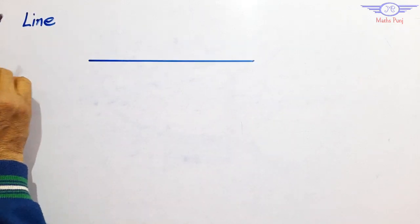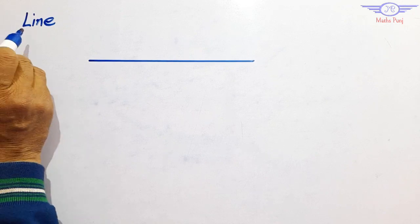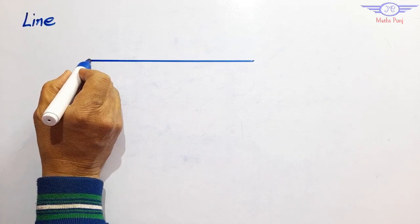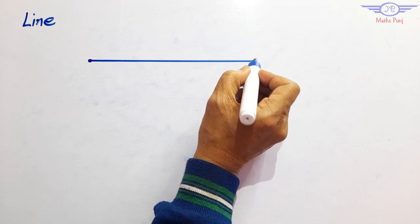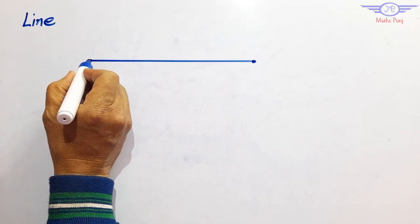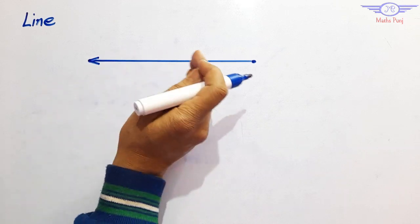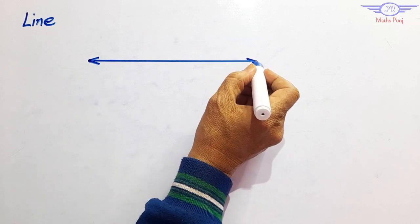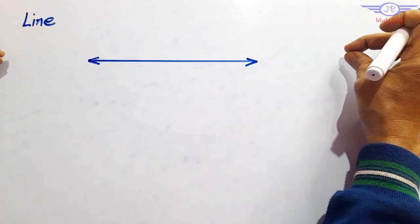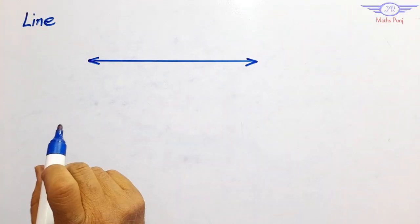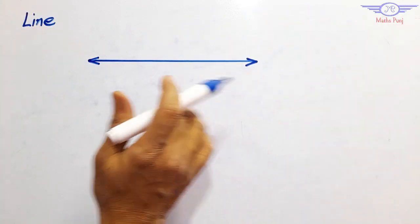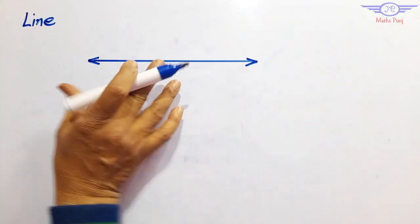Our next topic is line. What is a line? A line has no end points — it can extend in both directions, maybe this direction and maybe the right direction. So we can extend in both directions. It is called a line. Because it extends in an endless length, it has no definite length.